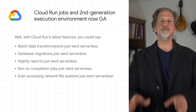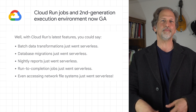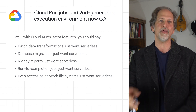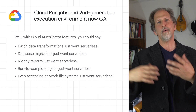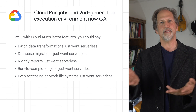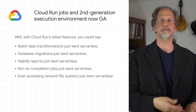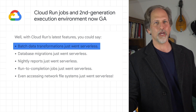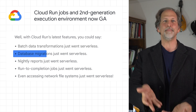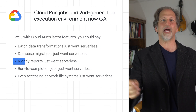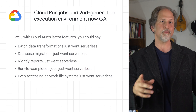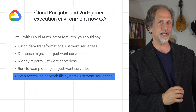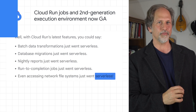We announced general availability of Cloud Run jobs and the Cloud Run second-generation execution environment, allowing many tasks to be done serverless, such as batch data transformations, database migrations, nightly reports, run-to-completion jobs, and even accessing network file systems.